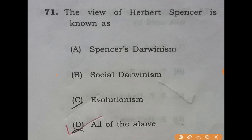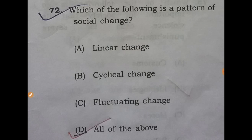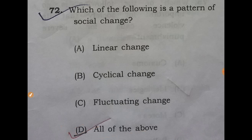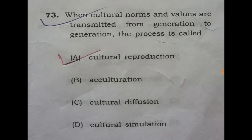The view of Herbert Spencer is known as — the answer is B: Social Darwinism. Next question, 72: which of the following is a pattern of social change? The answer is D: all of the above.